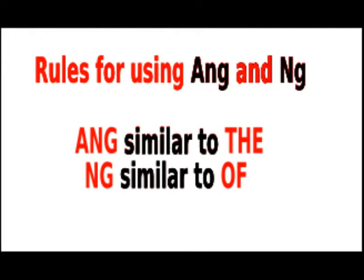Rule 1b: Ang is also placed to emphasize the identity of or mark the doer. 'Ako ay sumulat ng kwento' — I wrote a story. 'Ako ang sumulat ng kwento' — I was the one who wrote the story. 'Ang bata ay may sakit' — The child is sick. 'Ang bata ang may sakit' — The child is the one who is sick.